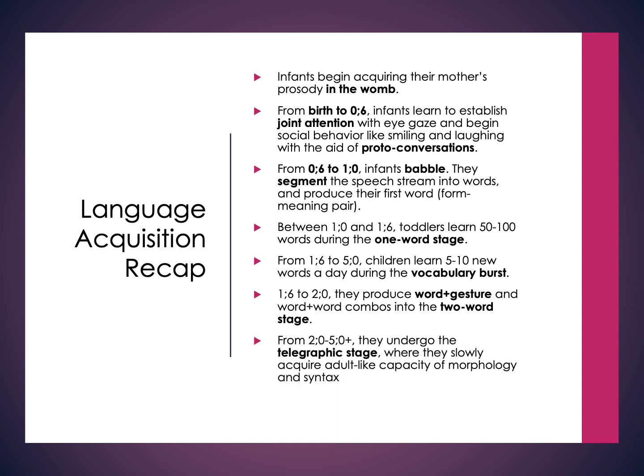From there, you start undergoing the telegraphic stage, a long-running stage where you're slowly starting to acquire a more adult-like capacity. You're starting to use different morphology aspects and more complex syntax until you gain about adult-like capacity with morphology rules and syntax — being able to put things into full sentences that use function words and morphology more correctly.